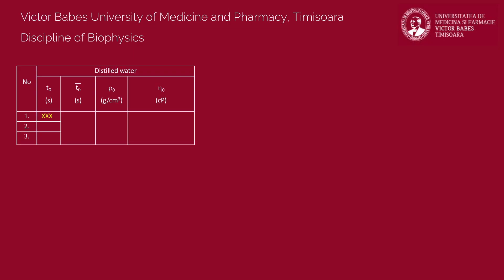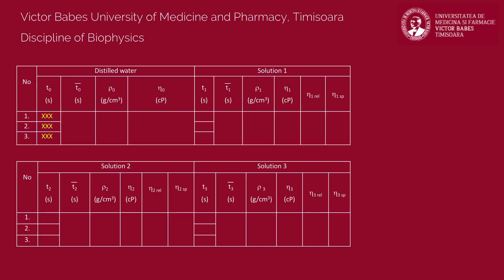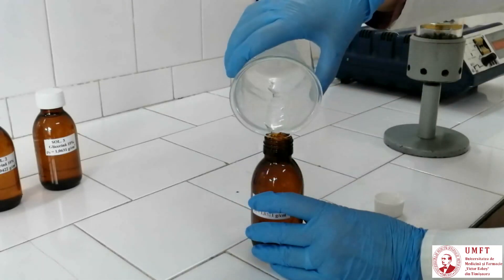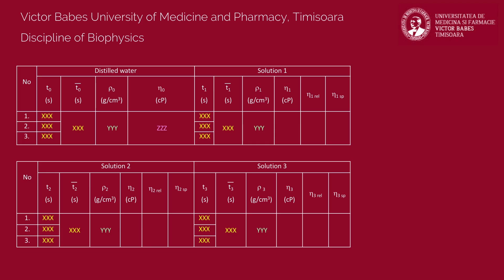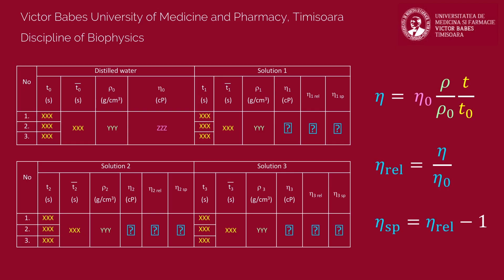Measure two more times the flow time of water and record the values in the table. Repeat these steps and determine three flow times for each of the study solutions. Fill the table with all the values and calculate the mean values for the time of flow of each solution. Attention! Don't discard the solutions — pour them back in their containers. The values of density and coefficient of viscosity for distilled water are given in the book. The densities of study solutions are written on the labels of their containers.